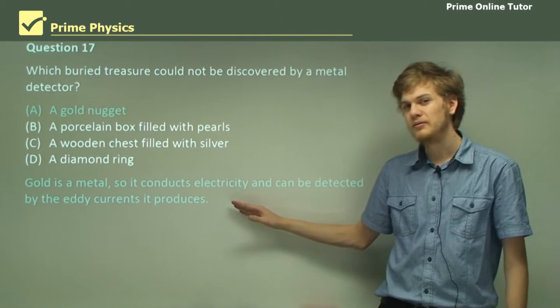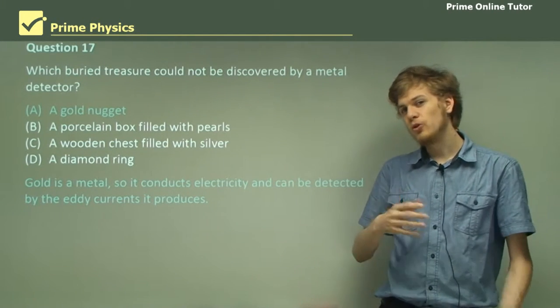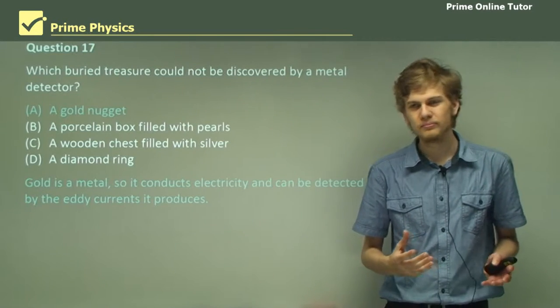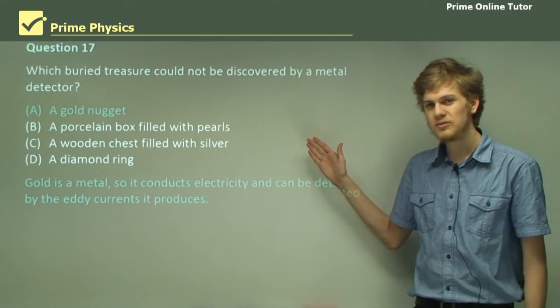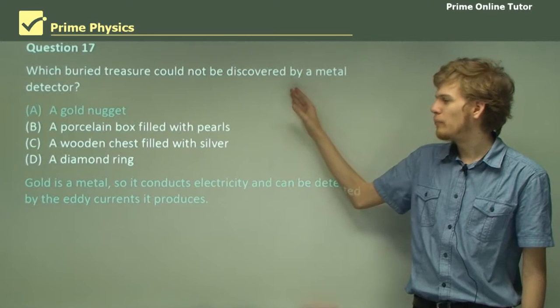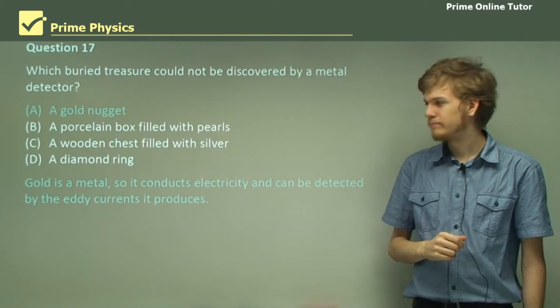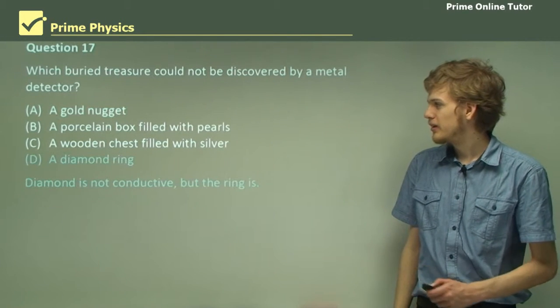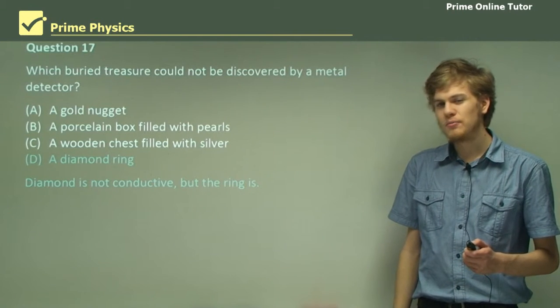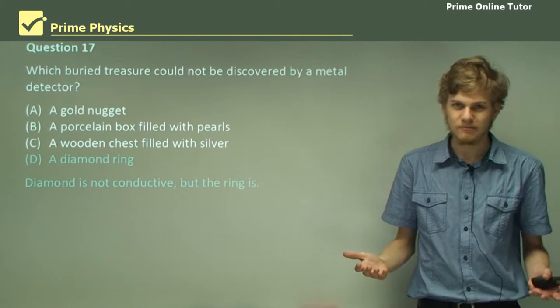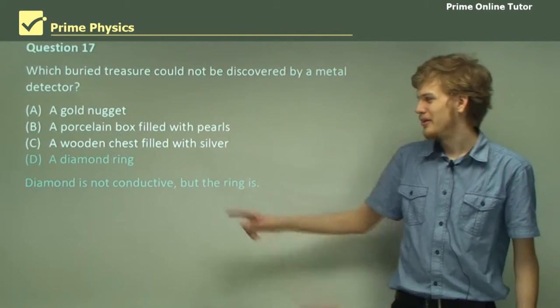It can't be a gold nugget. That would very easily be detected. A gold nugget is a piece of metal, and so it will produce eddy currents that will be easily detectable by the metal detector. If we look at a diamond ring, you might say the diamond is an insulator, but the ring isn't.